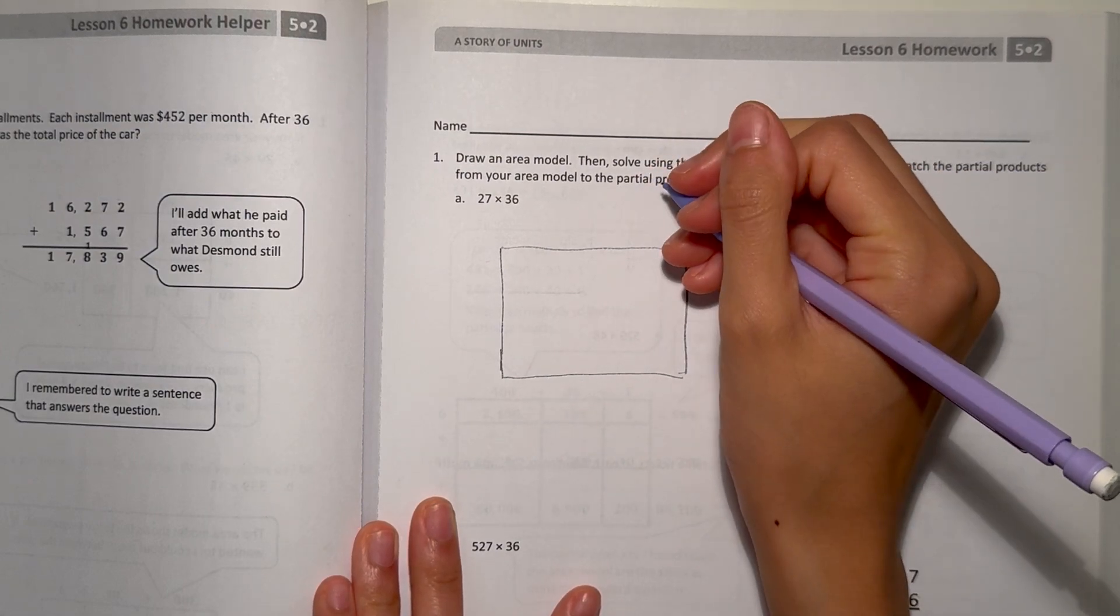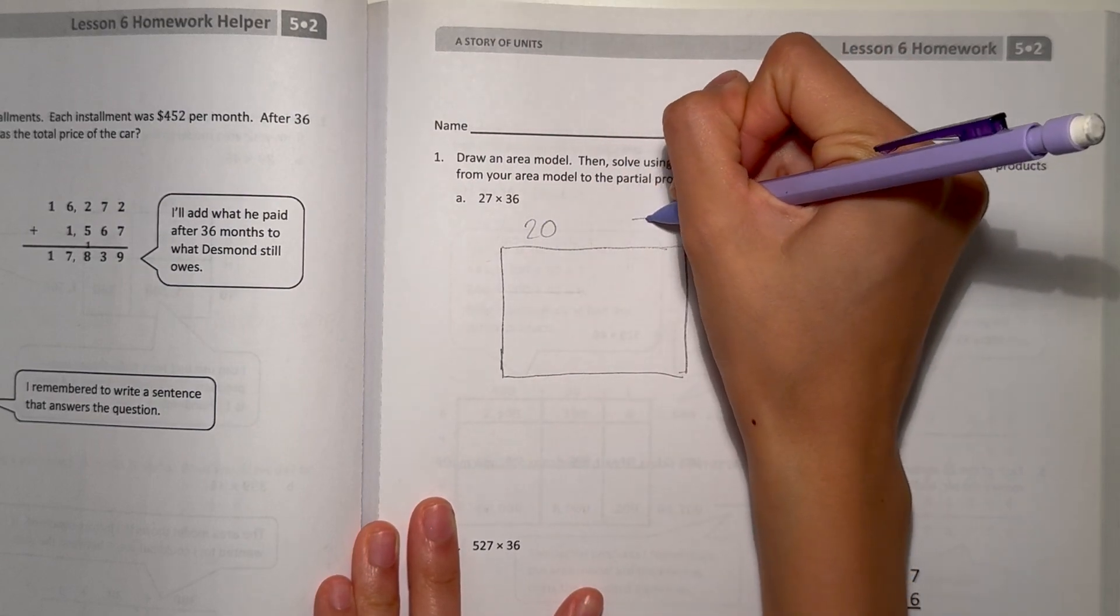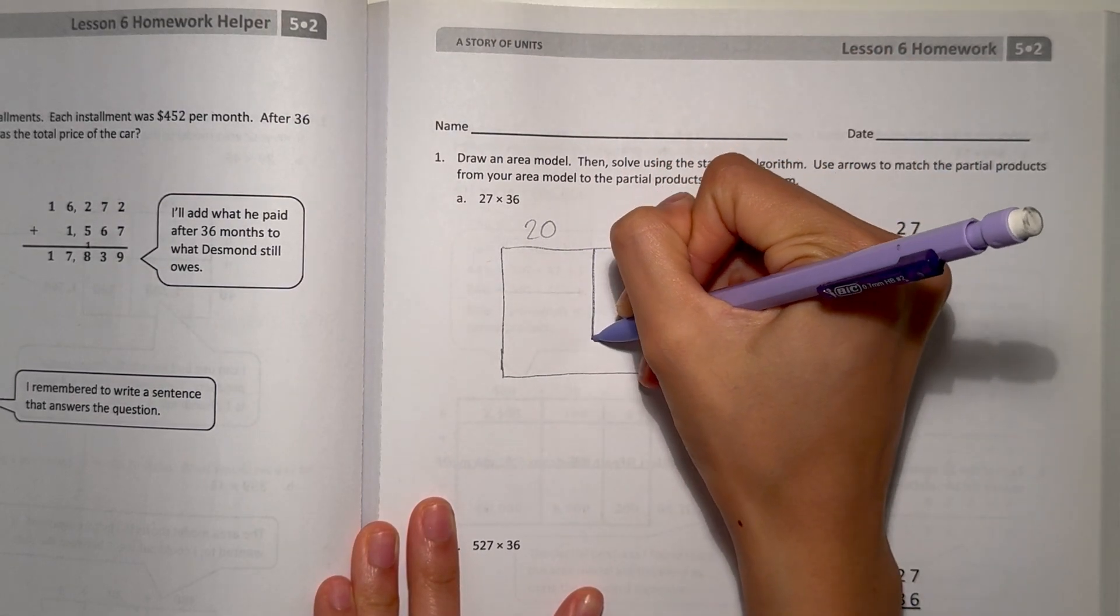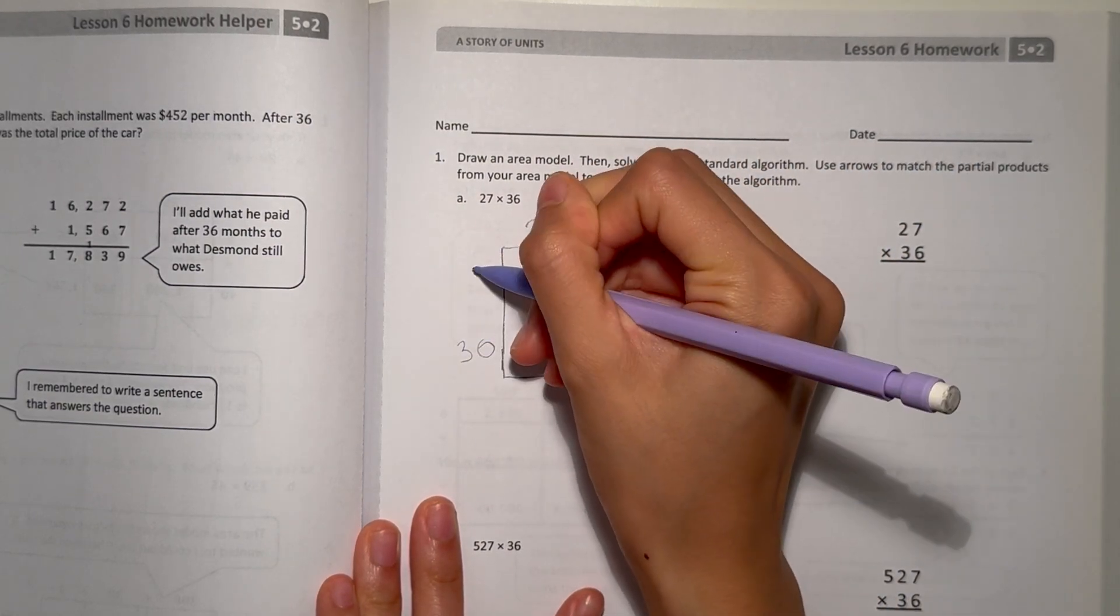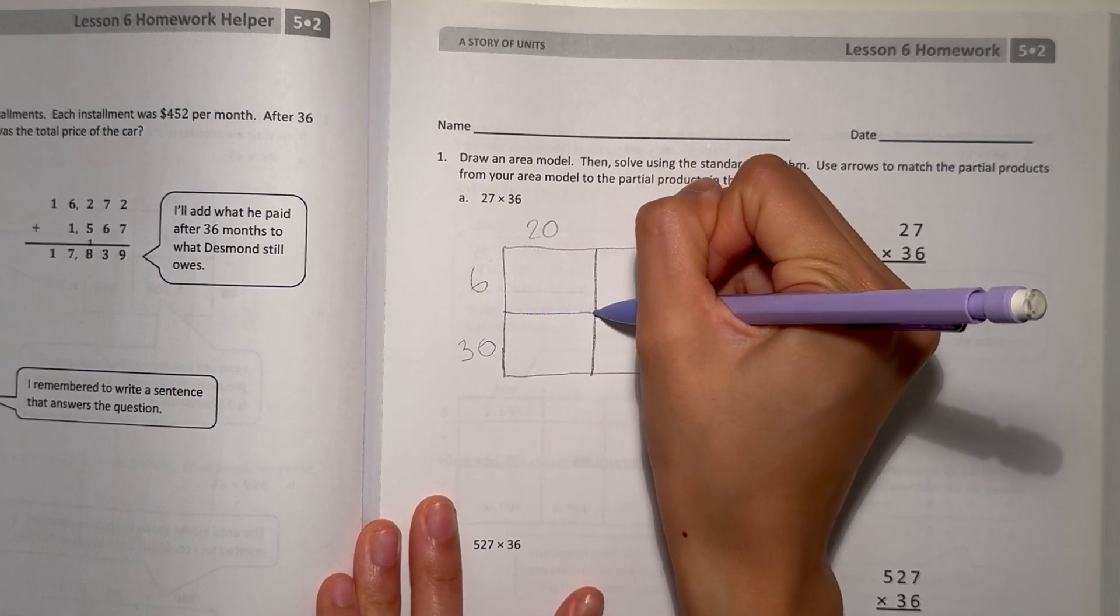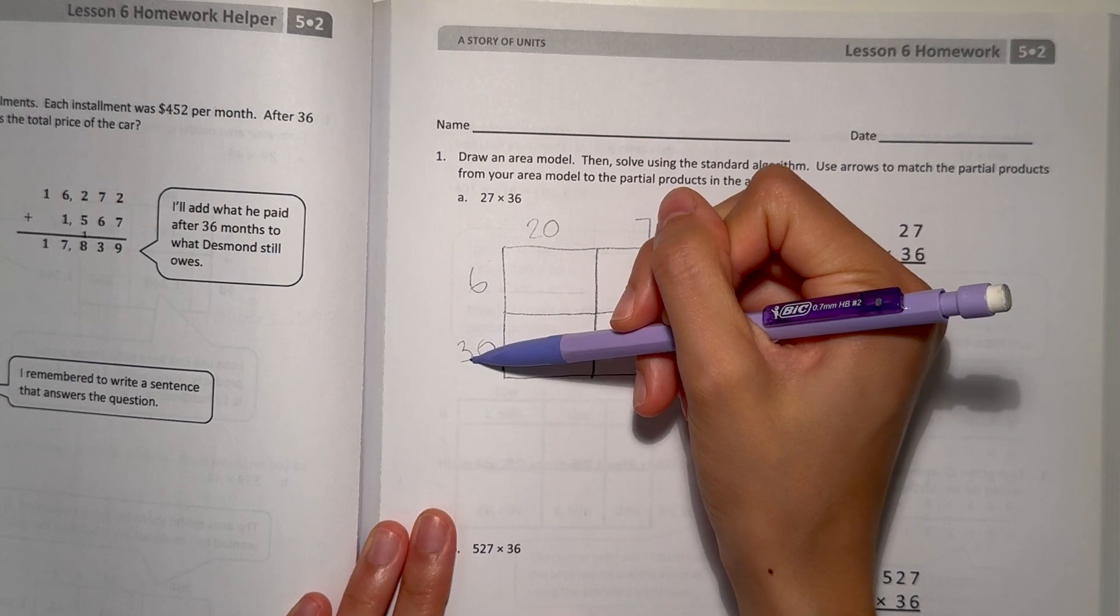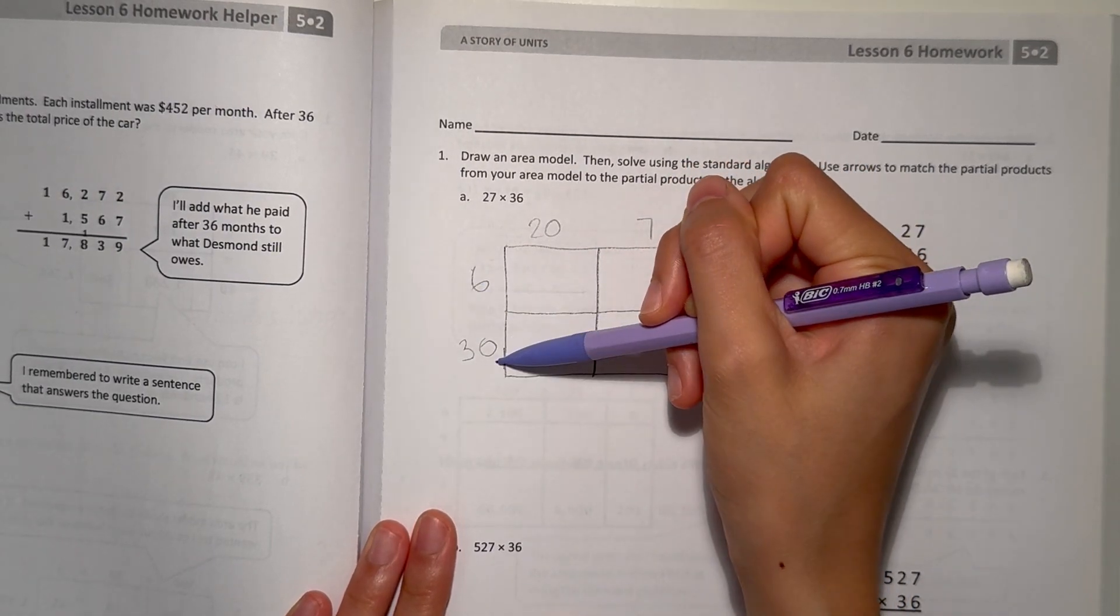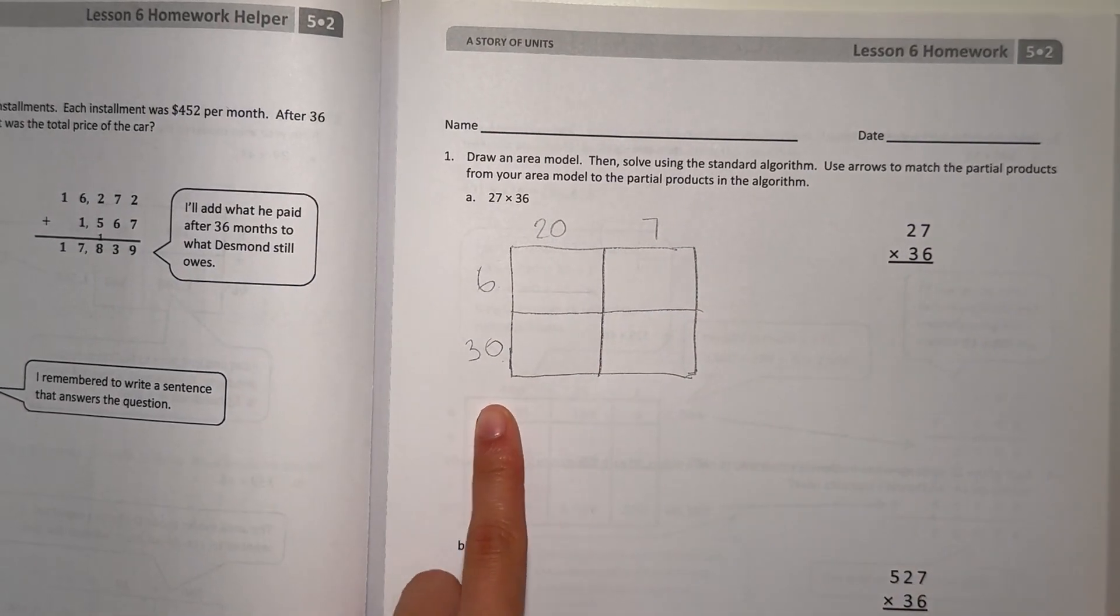So 27, bring it apart into 20 and 7. We can split it in half. Times 36. We do 36 and split it in half too. And it's very important that we set it up this way. We have to set up like 36, 30 on the bottom, 6 on top. We can't do it the other way around. It has to be like this.